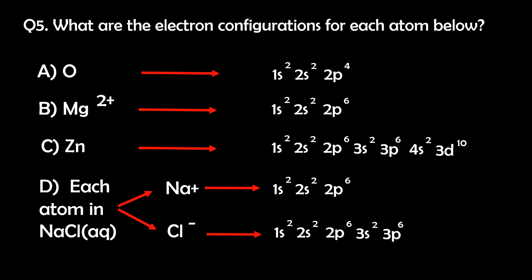Therefore, for sodium plus, we have the electron configuration 1s2, 2s2, 2p6, or neon. And for chlorine with a negative charge, we have 1s2, 2s2, 2p6, 3s2, and 3p6, or argon.